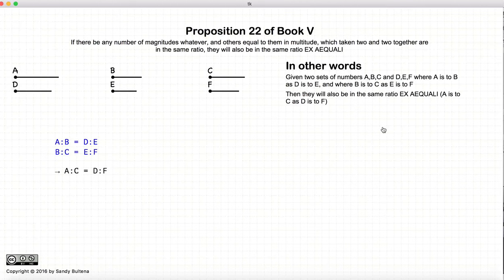In this proposition we are going to start with the same equalities that we had for Proposition 20. In other words, A to B is equal to the ratio of D to E, and the ratio of B to C is equal to the ratio E to F. And in this proposition we are going to show that if these equalities hold, then it is also true that the ratio of A to C will be equal to the ratio of D to F.